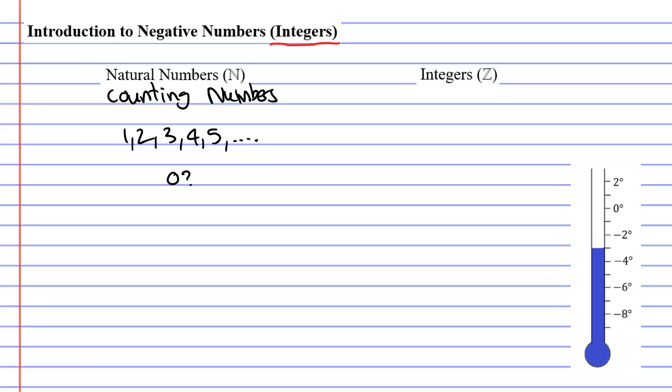And this is where we come to integers. Integers include the counting numbers. They include the 1, 2, 3, 4, 5, and so on. They also include the number 0, and there's no debate about that. The number 0 is included in the set of integers.